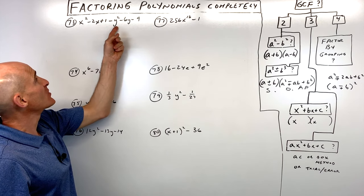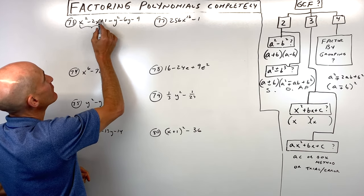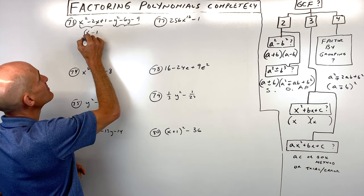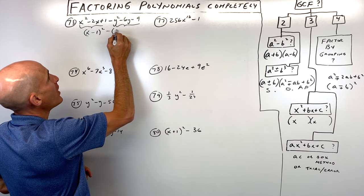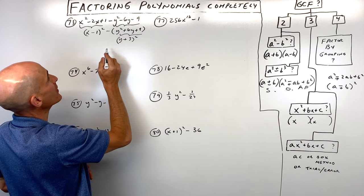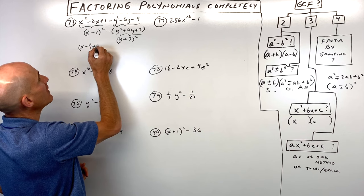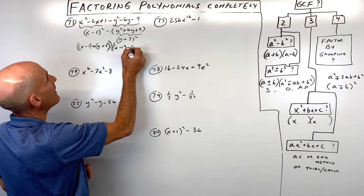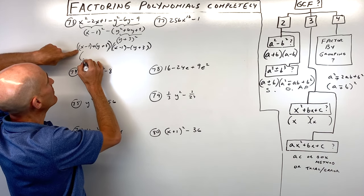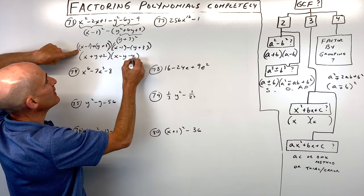Number seventy-three is interesting — we've actually got six terms. Looking closely, we can factor the first three terms and the last three terms separately. The first three form a perfect square trinomial: x minus 1 quantity squared. For the last three, factor out negative 1, giving negative 1 times y squared plus 6y plus 9, which is also a perfect square trinomial: negative 1 times y plus 3 quantity squared. Now we have x minus 1 squared minus y plus 3 squared — a difference of two squares. Factoring gives x minus 1 plus y plus 3 times x minus 1 minus y minus 3, which simplifies to x plus y plus 2 times x minus y minus 4.